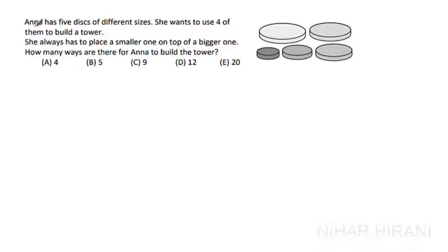Let's solve this one. Anna has 5 disks given over here. She wants to build a tower using 4 of the disks. She always has to place a smaller one on top of a bigger one. How many ways can she make the arrangement? Let's give them numbers very quickly.